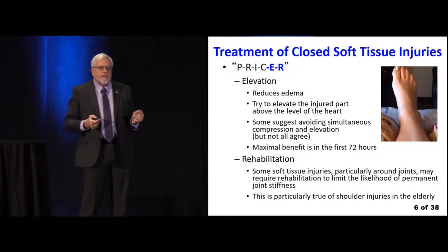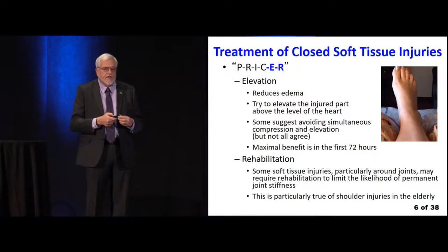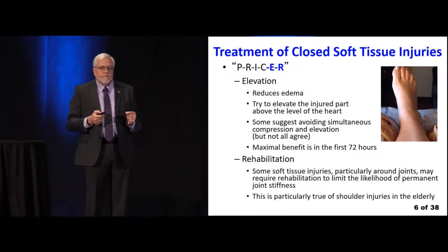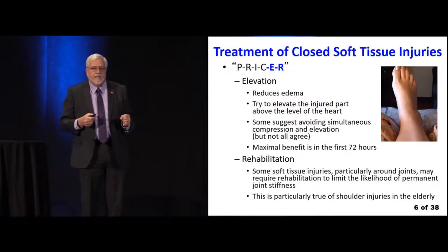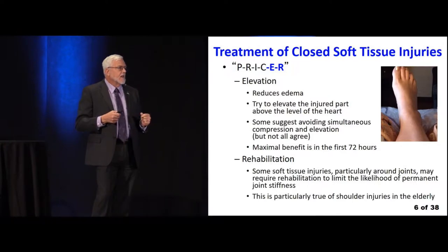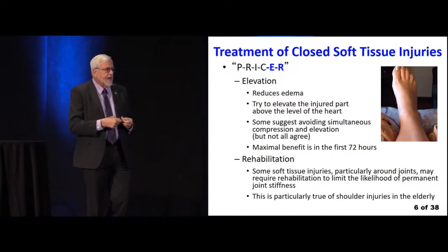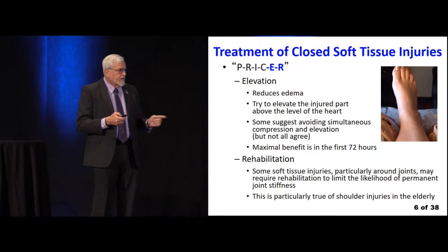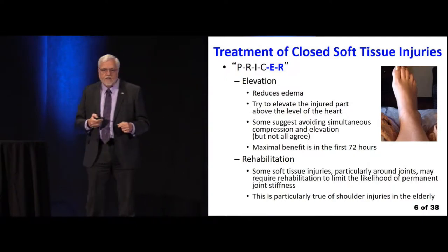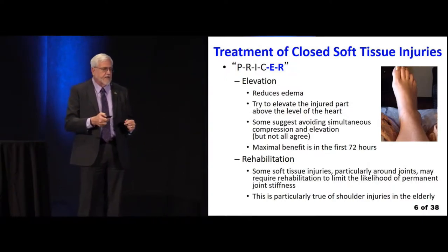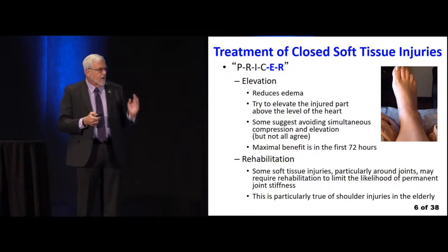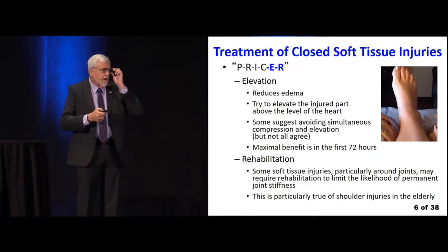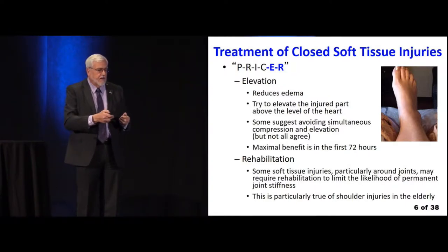The maximum benefits for elevation occur, like with ice, in the first 72 hours. And then R is for rehabilitation. Some soft tissue injuries, particularly on the joints, may require rehab to limit the likelihood of permanent joint stiffness. The quicker we get people back ambulating at the appropriate time, the better. This is also true with shoulder injuries — particularly in the elderly. The longer we keep somebody immobilized, the higher the incidence of stiffness and lack of mobility.